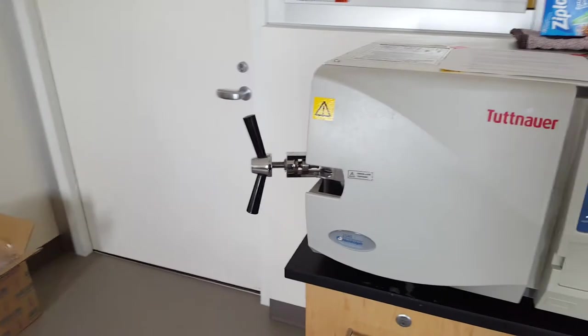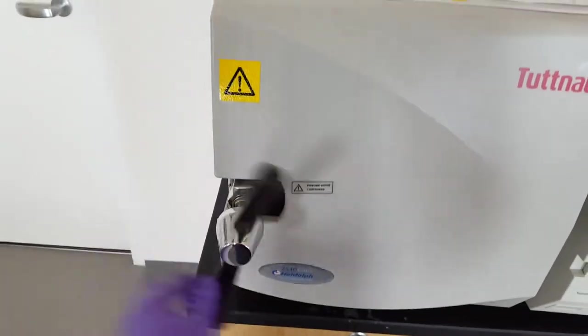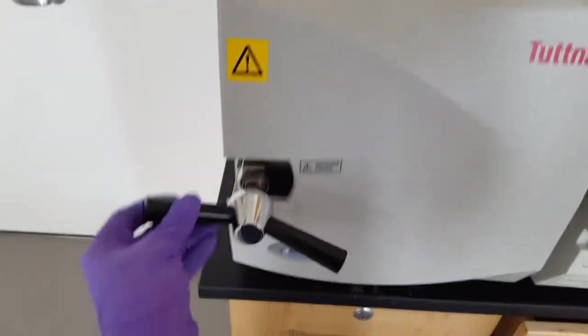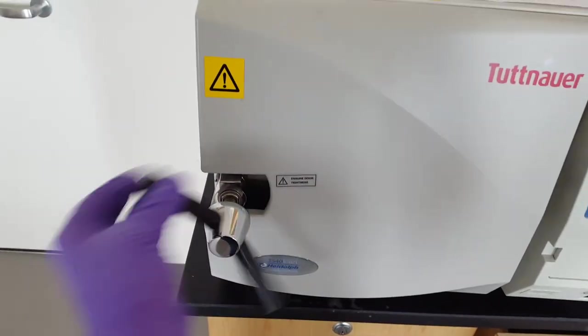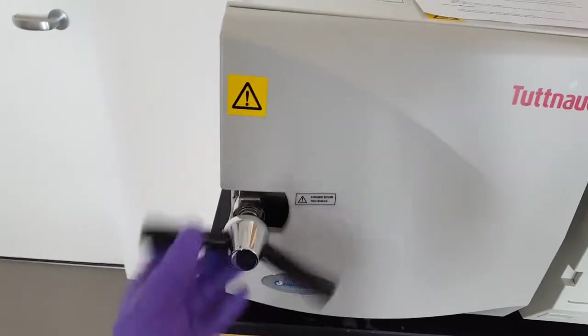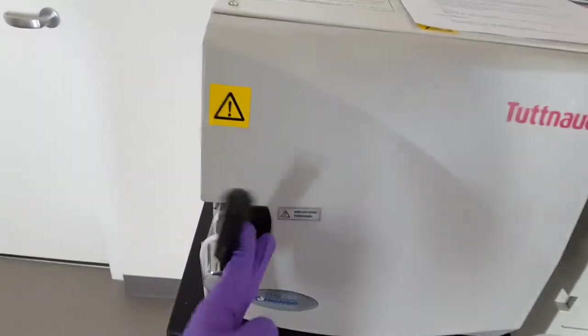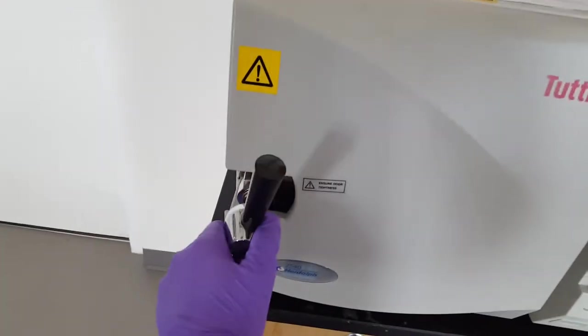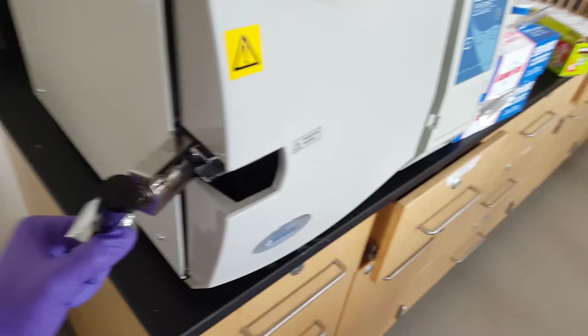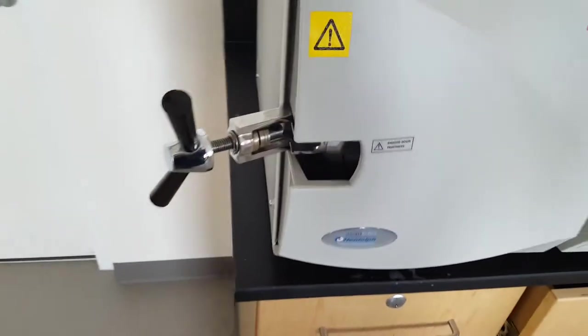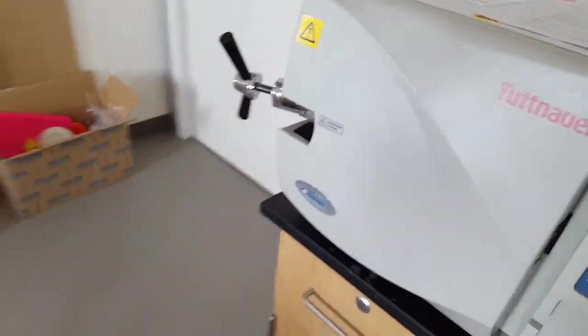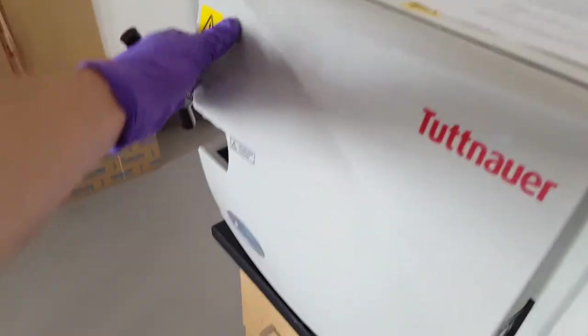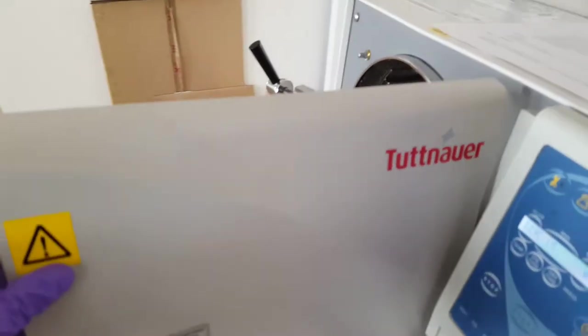So the way to open the autoclave, this will usually be closed. So all you do is you open this, unscrew it this way, and then you lift it open like this. And then you want to make sure that when you open the autoclave, you're standing over here, and then you pull the door out open like this.